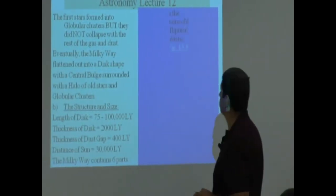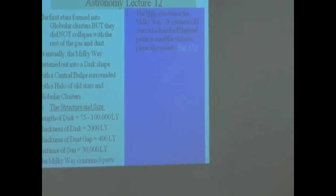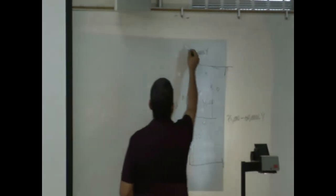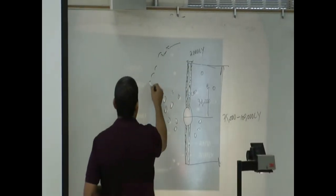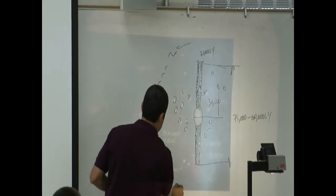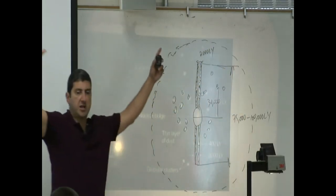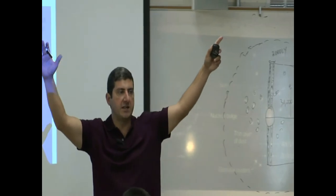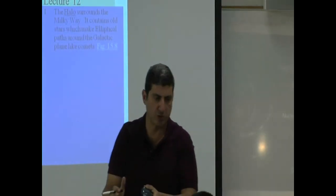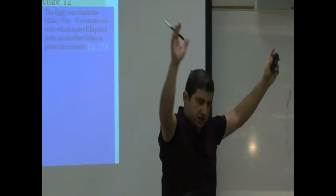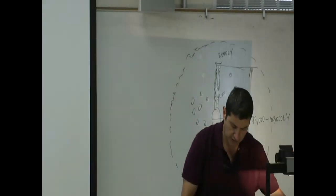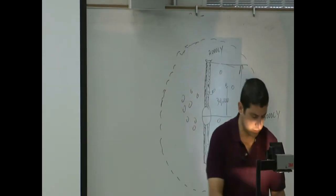The Milky Way contains six portions to it, six big parts. The halo, in this picture would be all the stars that are surrounding it like this. They were the original stars when the galaxy began, but they did not collapse with the rest of the Milky Way. They stayed there.